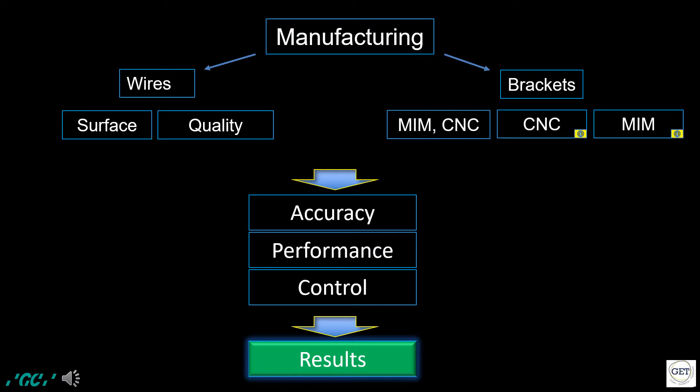The industrial manufacturing of brackets and wires has an important influence on orthodontic treatment progress and results. There are three common techniques in bracket manufacturing: MIM (metal injection molding), CNC (computerized numerical cutting), which is a development of the old milling technique, and a third technique combining MIM and CNC, in which the bracket body is MIM and the slot is later cut by the CNC procedure. GC brackets are made using this combination technique, providing a high-precision bracket at a fair price.